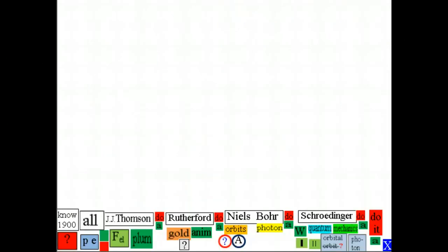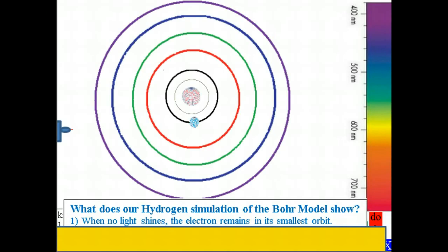We want to study in more detail what we have just seen. Double-click on the red round button with a question mark, and also on the button "Orbits" under Niels Bohr. The first observation is: when no light shines, the electron remains in its smallest orbit. Put the hydrogen atom in a dark room where absolutely no light shines — this is called the ground state. In the ground state, the electron orbits the nucleus in the smallest, closest orbit.